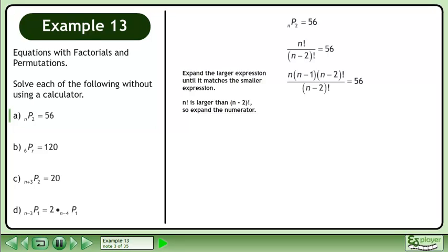n factorial is larger than (n-2) factorial, so expand the numerator. Cancel (n-2) factorial from the numerator and denominator.